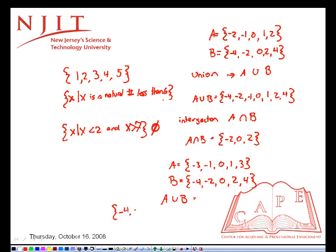So we have negative four, negative three, negative two, negative one, zero, one, two, three, and four.